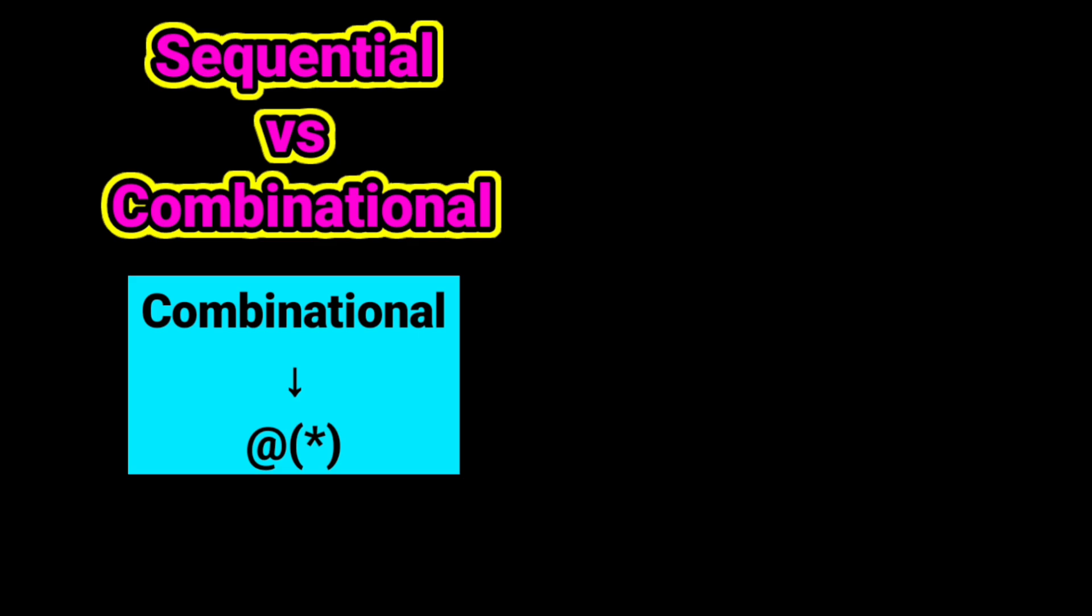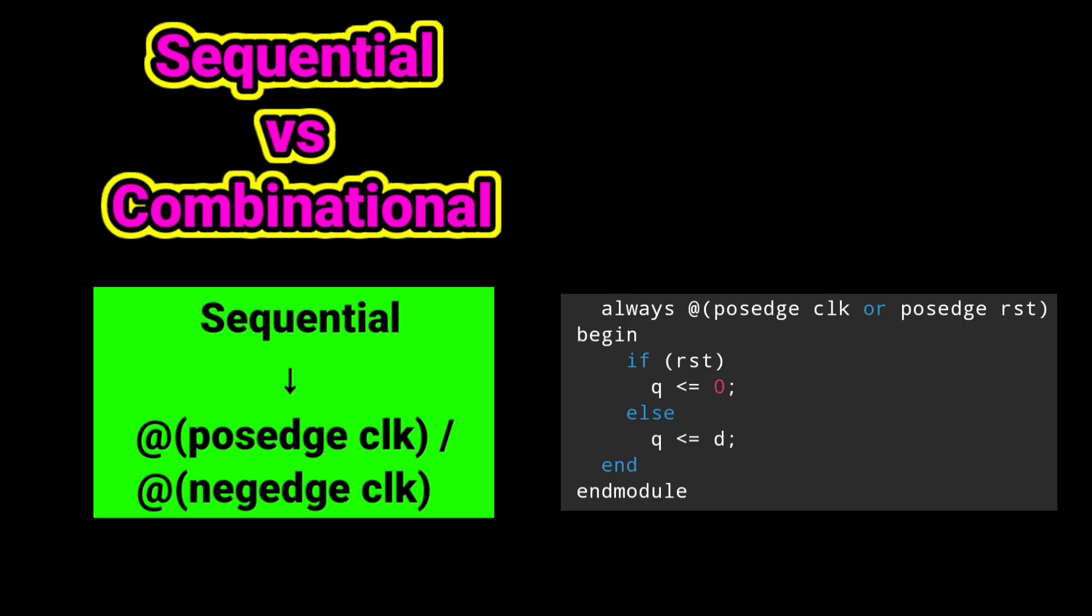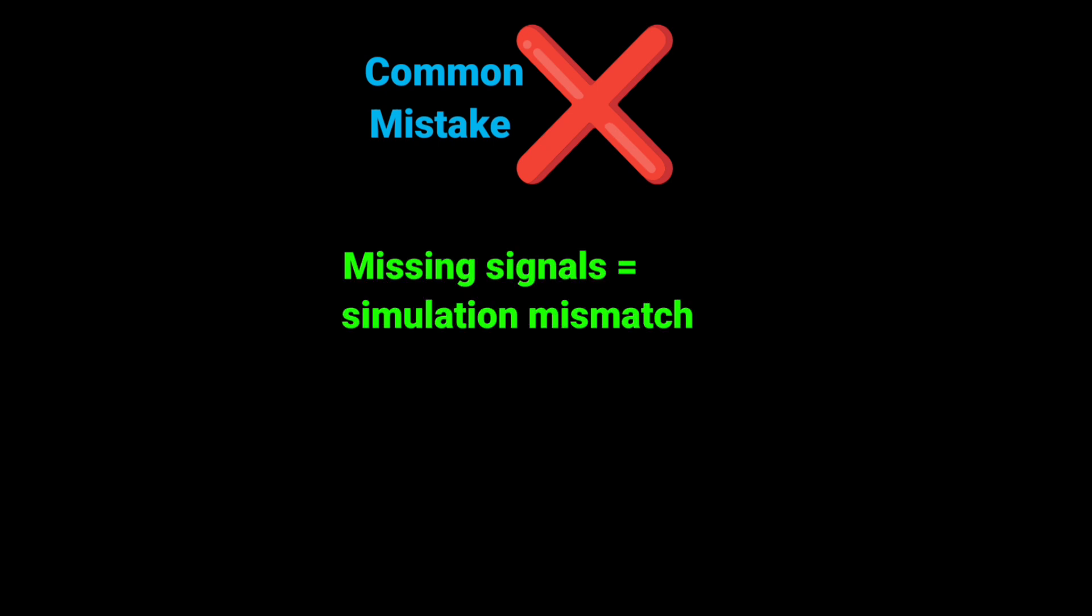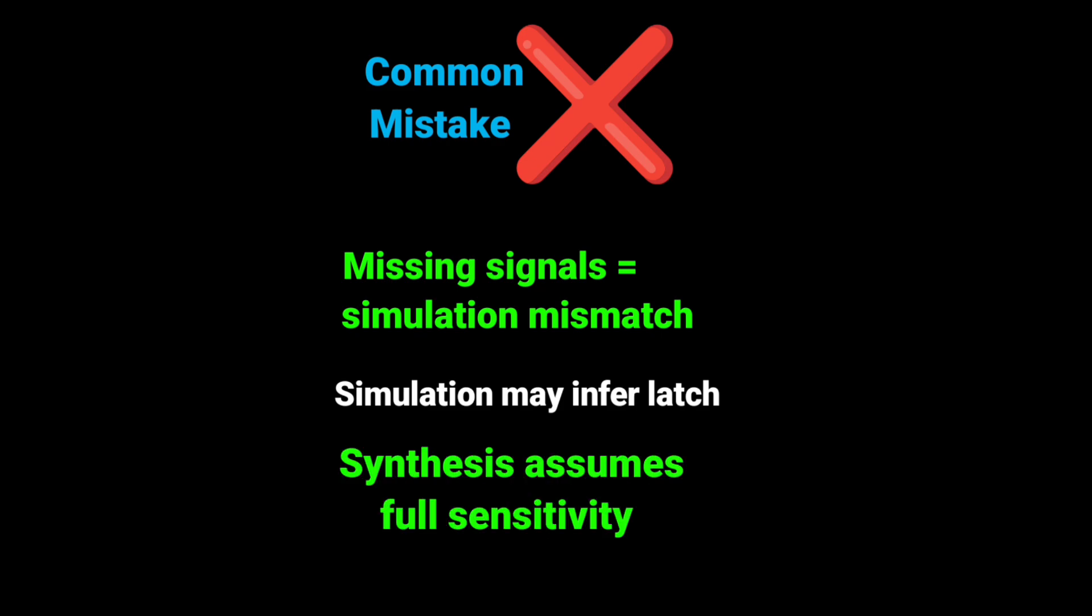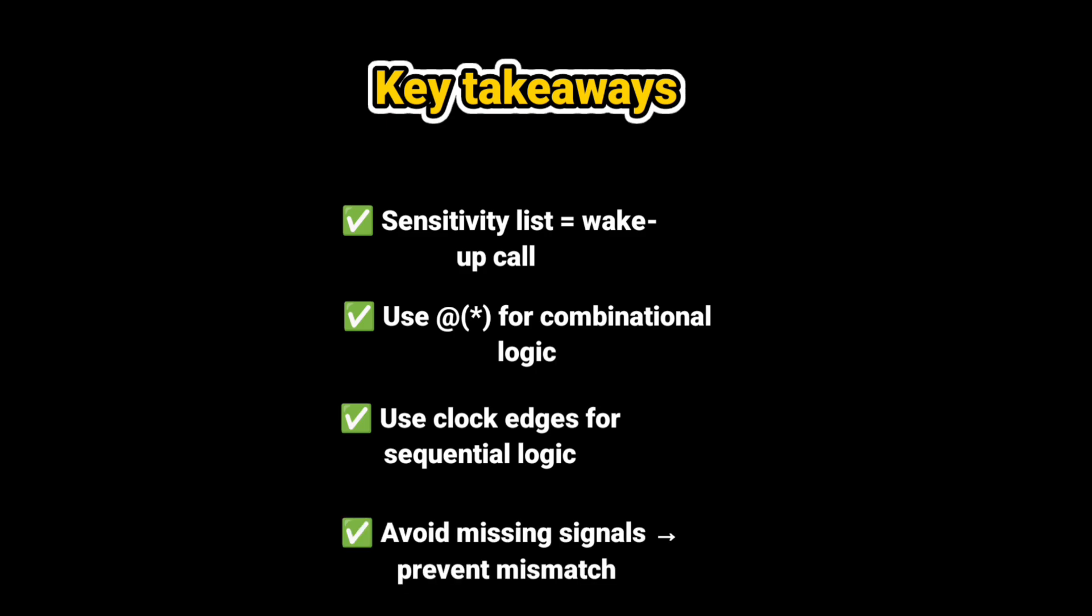Next is sequential vs. combinational. For combinational logic, we use the shortcut one like @(*). For sequential logic, we use clock, like always @(posedge clock) q <= d. This means the block wakes up only on the positive edge of the clock. If you miss a signal in the sensitivity list, the simulation may show latch-like behavior or incorrect results. But synthesis tools usually assume complete sensitivity, so the mismatch can be dangerous. So in short, sensitivity list decides when always block runs. @(*) ensures correct combinational logic. @(posedge clock) or @(negedge clock) is used for sequential logic. Missing signals in sensitivity list equals simulation vs. synthesis mismatch.